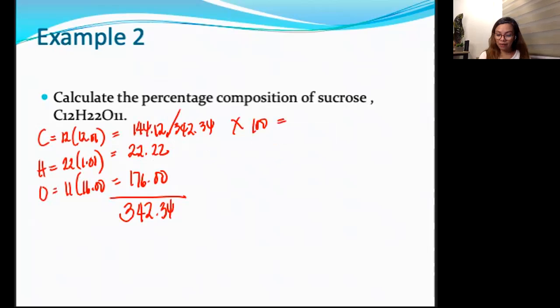144.12 divided by 342.34. What did you get there? I hope you're not just looking or watching the video. Try to pause this from time to time. And then mimic what I'm doing here. So that you get to understand. Times 100. So, this is 42.10% to be rounded off to two decimal places.